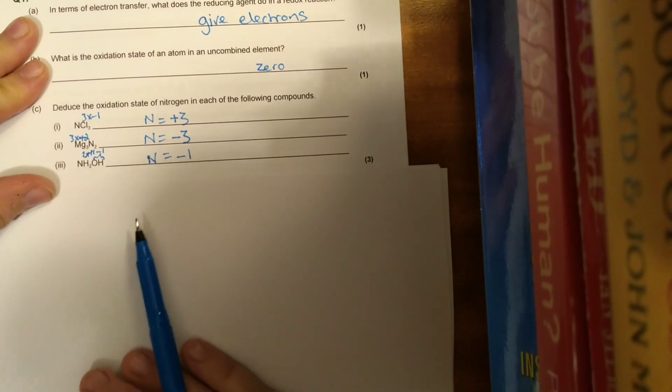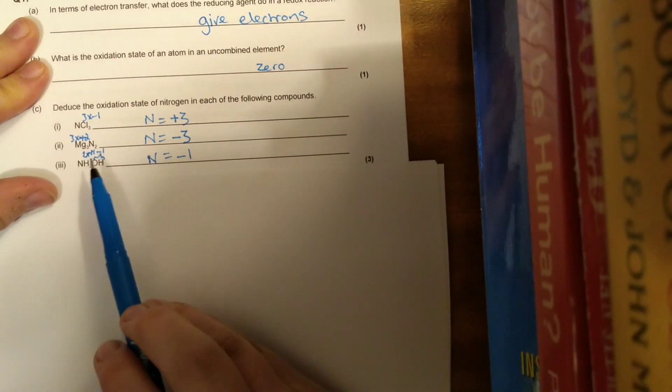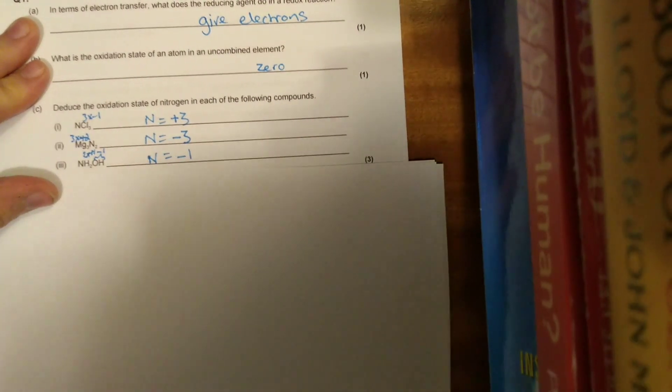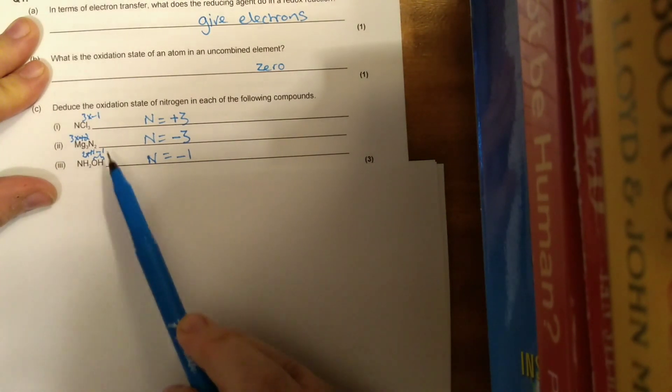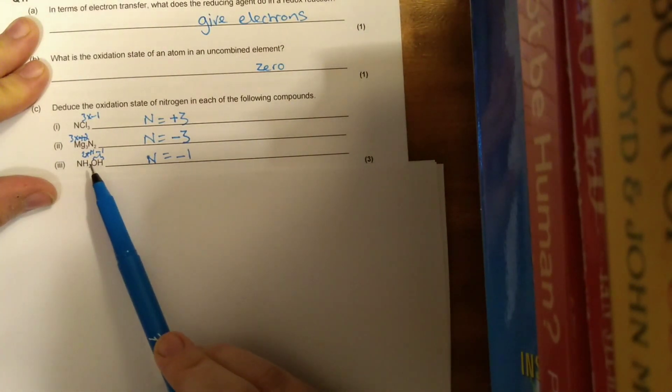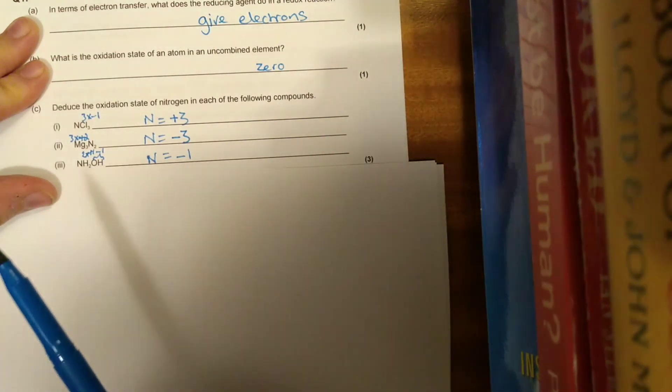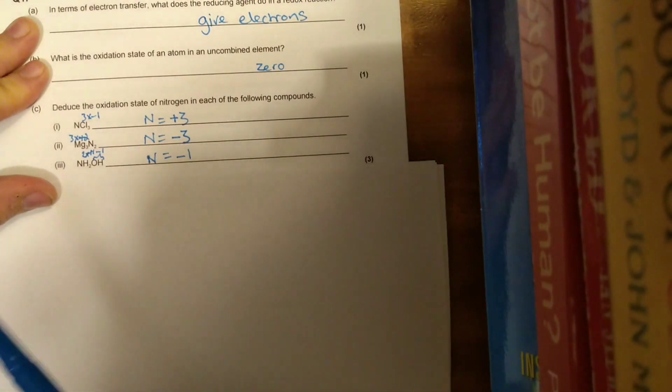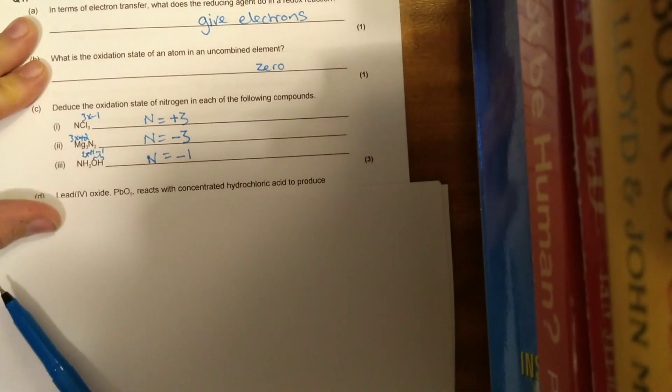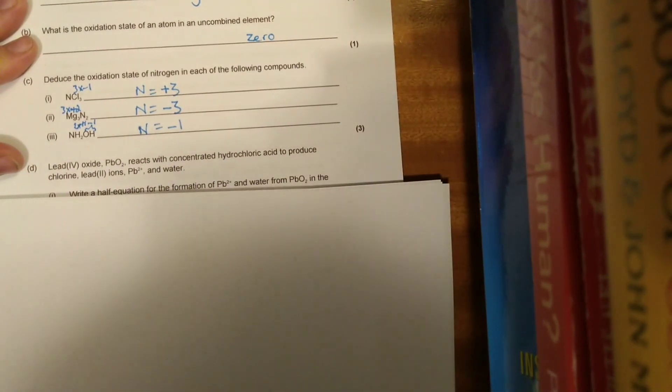With the magnesium and nitrogen combined here, we've got three lots of this group 2 metal. Three times plus 2, because it loses two electrons, we're positively charged. That gives us plus 6. So these two nitrogens must have an oxidation state of minus 6, and one of those would have minus 3.